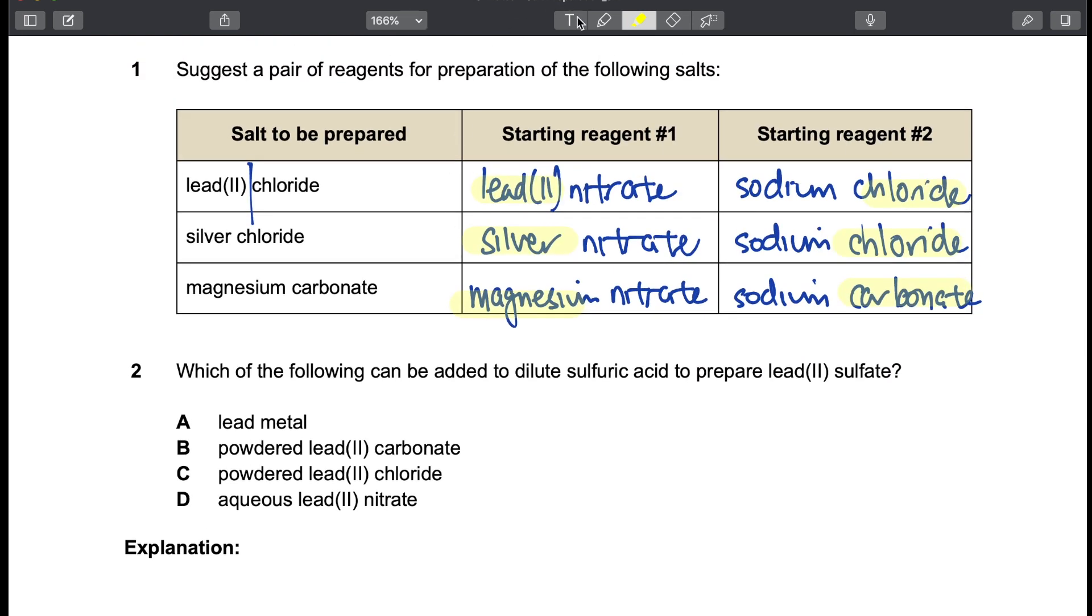Question two, which of the following can be added to dilute sulfuric acid to prepare lead(II) sulfate? So you read the question, preparing this, we always remember whether it's soluble or not. So this is insoluble. That's the first thing we look at. So insoluble, straight away we use precipitation. And precipitation reaction involves using two aqueous solutions.